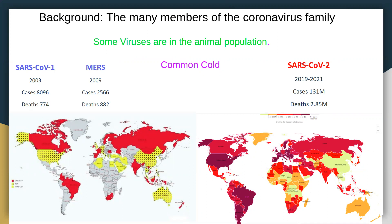Another member of the family, MERS, emerged in 2009, also with relatively small spread, although the World Health Organization keeps monitoring for future outbreaks. Then the latest SARS-CoV-2 member appeared in late 2019, resulting in a worldwide pandemic where there are over 3 million deaths so far.